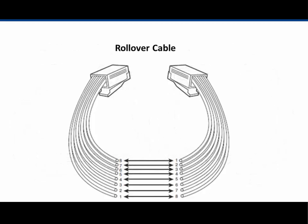A rollover cable is a special cable invented by Cisco Networks for console connections. Pin 1 runs to pin 8 on the other side. You can see pin 1 on the left with the tab down, running all the way to pin 8 on the other side — tab down. One runs to 8, 2 to 7, 3 to 6. This is an example of a rollover cable.